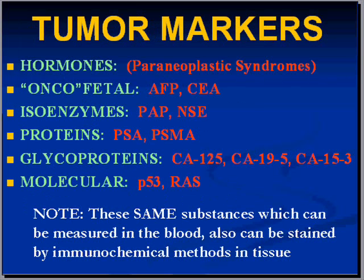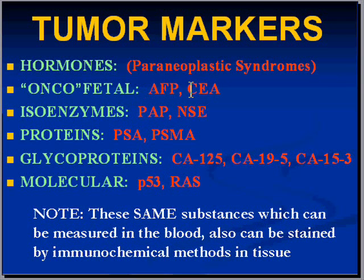Certain tumors express certain compounds. We saw in the case of hormones that tumors express endocrine compounds. Some tumors express antigens called oncofetal antigens — for example, CEA (carcinoembryonic antigen) from a GI cancer, or AFP (alpha-fetoprotein) from a liver cancer. Sometimes tumor markers are isoenzymes, like PAP (prostatic acid phosphatase), which you'd expect from a prostate tumor, or NSE (neuron-specific enolase).